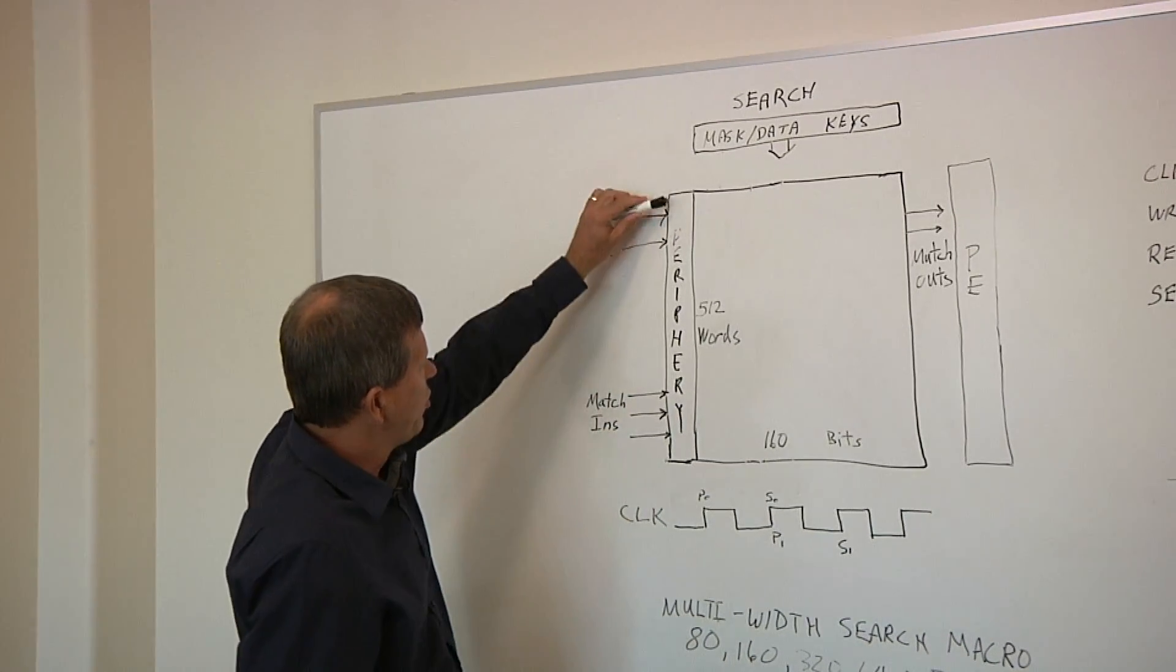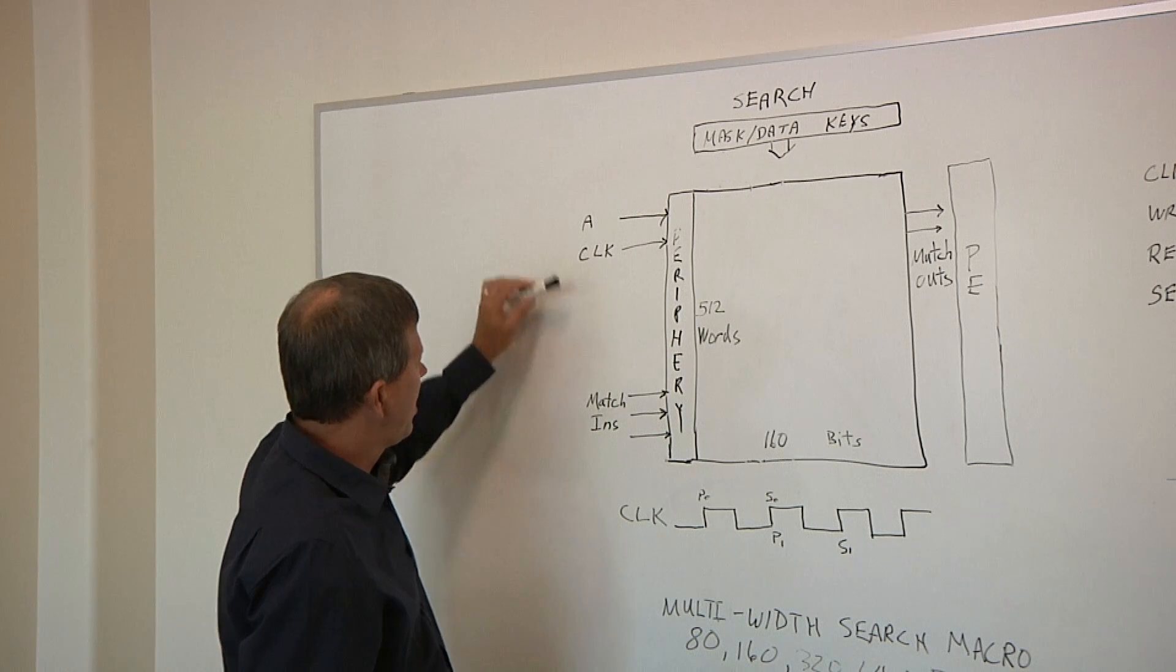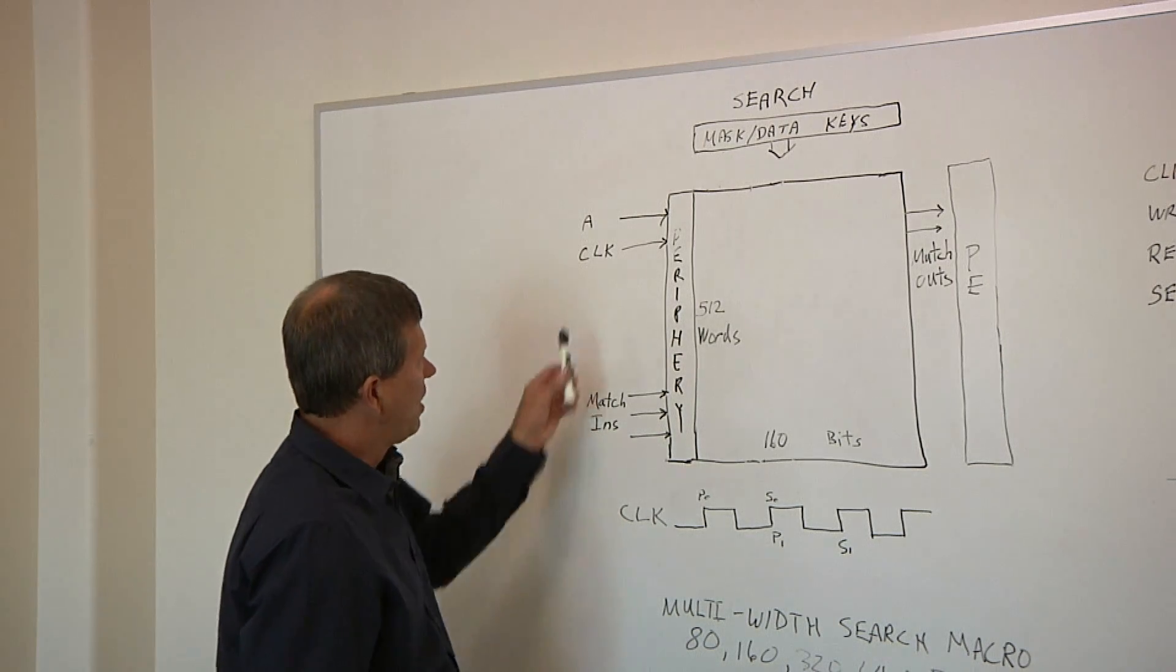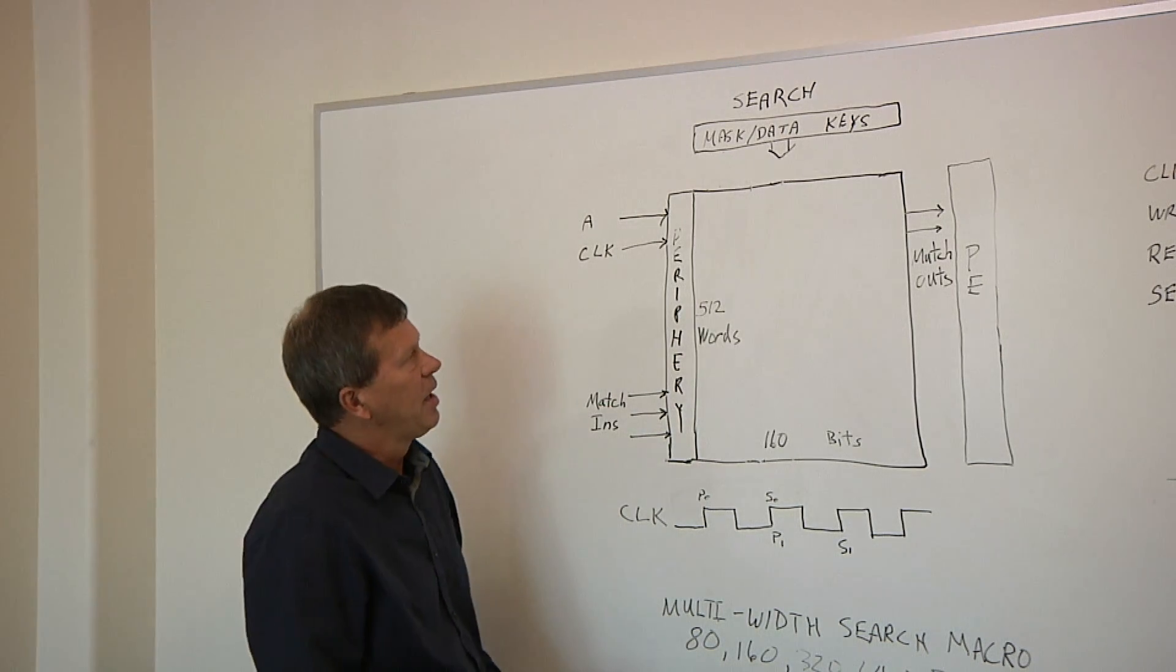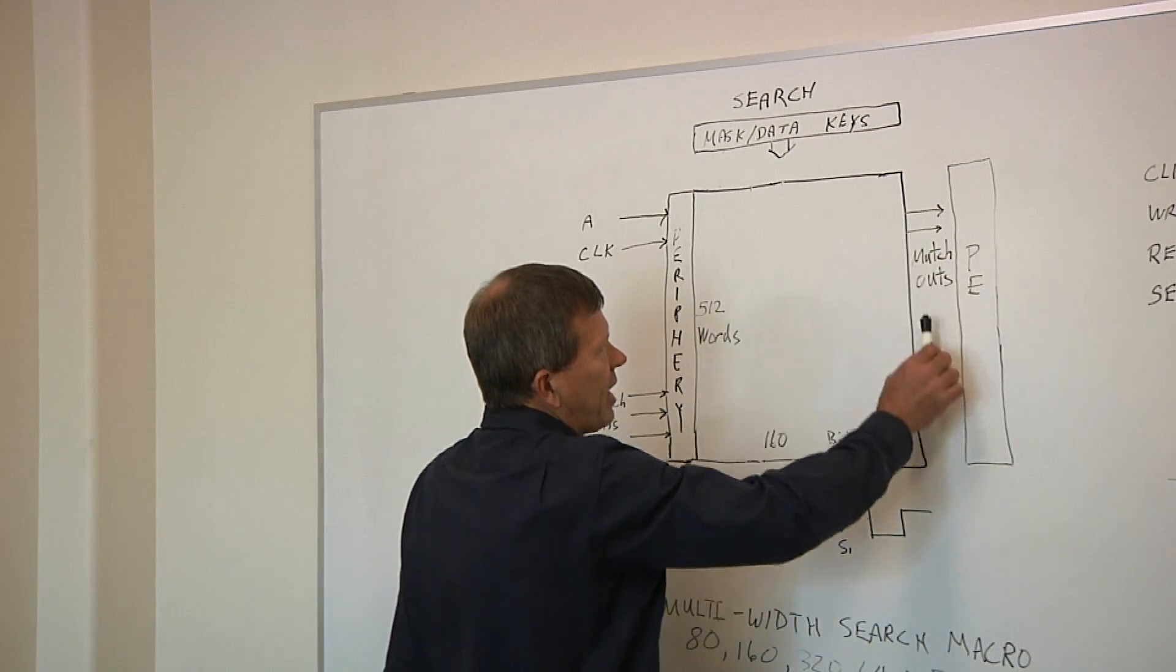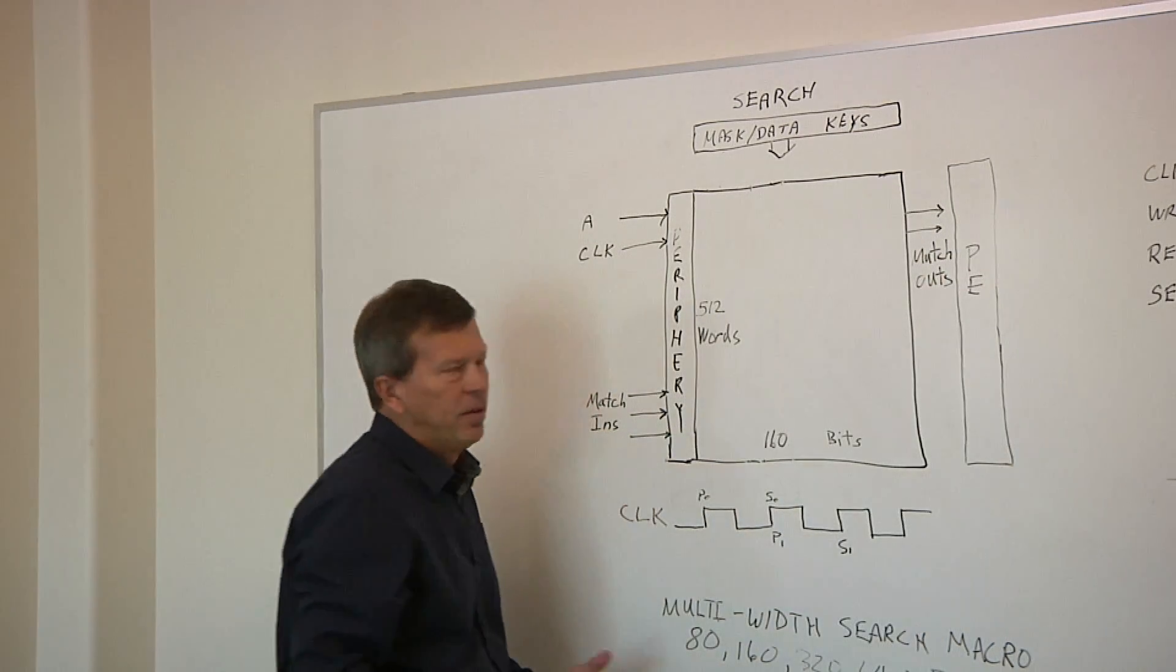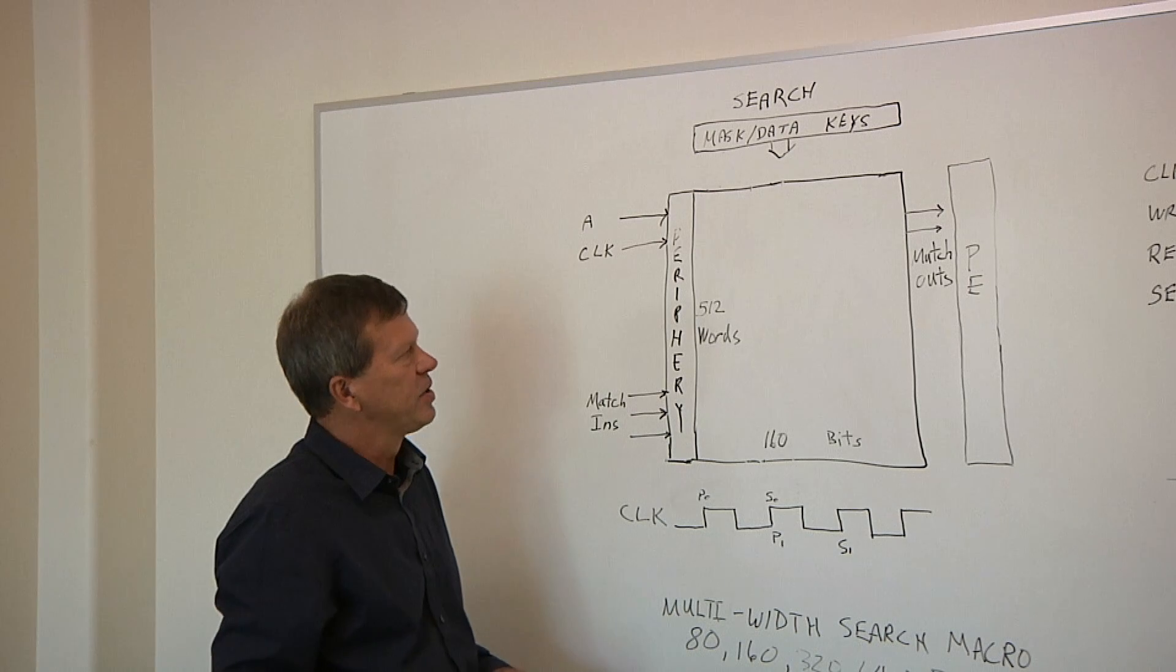On the left, you'll see the periphery down the left side. The address, clock, and match ins are down the left side. And on the right, you'll see the result match outs of priority encoder, which is a result of the search that you're presenting.